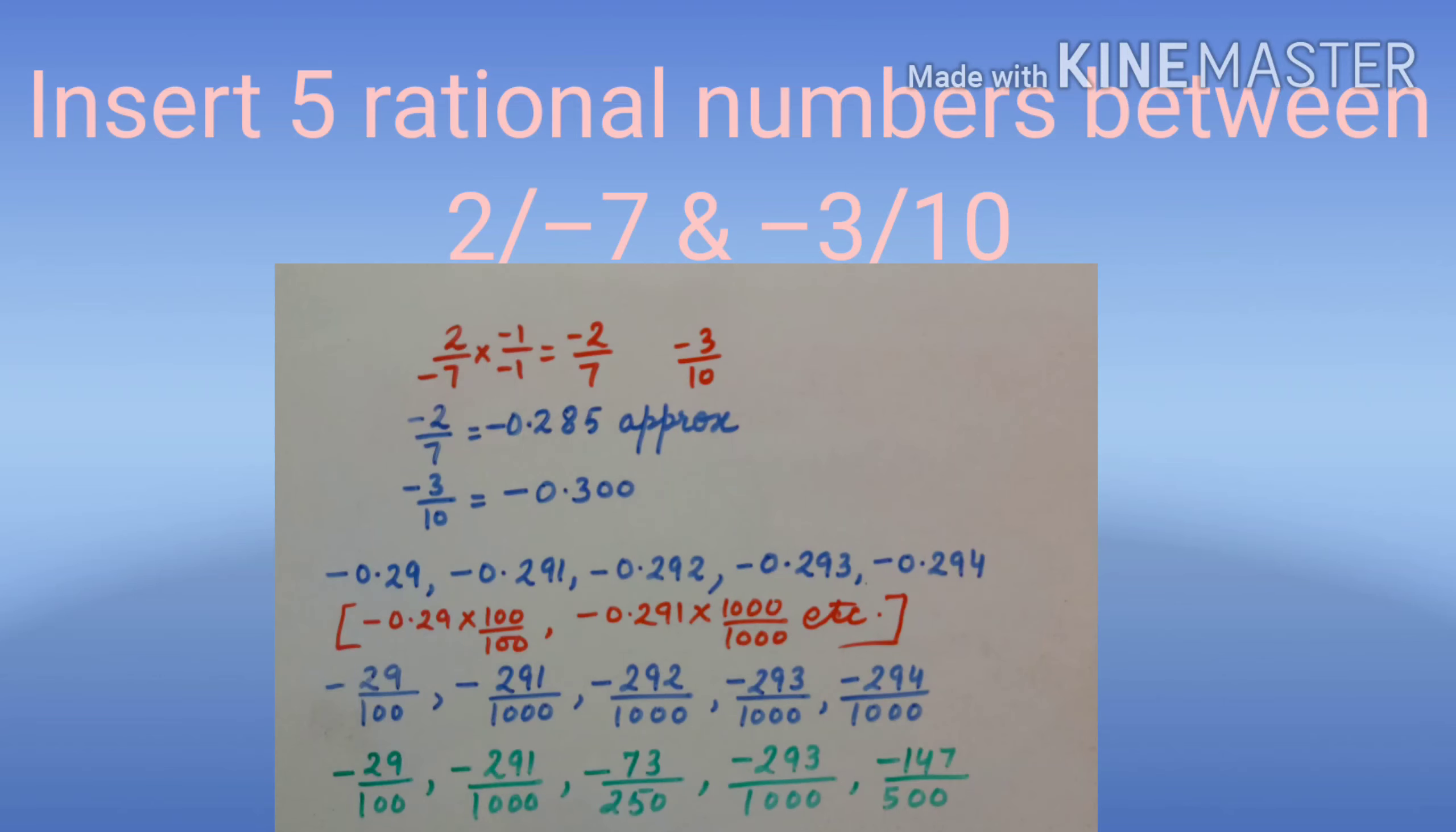For third method, convert the rational numbers into decimal expansion. In this example, minus 2 upon 7 when we convert is minus 0.285 approximately. And minus 3 upon 10 is minus 0.300. We will convert into like decimals.